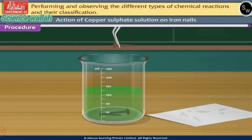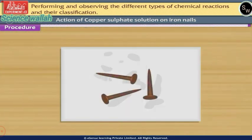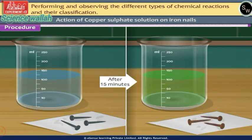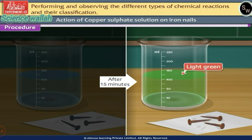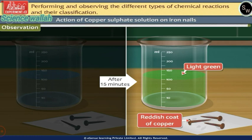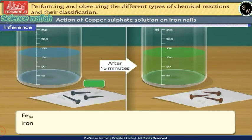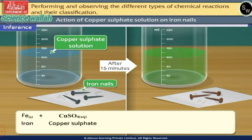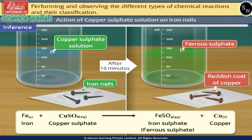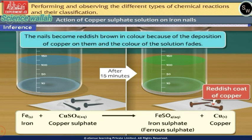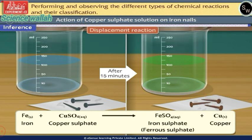Remove the nails from the solution, wash them with water, and place them on a filter paper to dry. The colour of the solution has faded, and the nails have become reddish brown in colour. Inference: iron displaces copper from the copper sulphate solution. The nails become reddish brown due to deposition of copper on them, and the solution fades. This is an example of a displacement reaction.